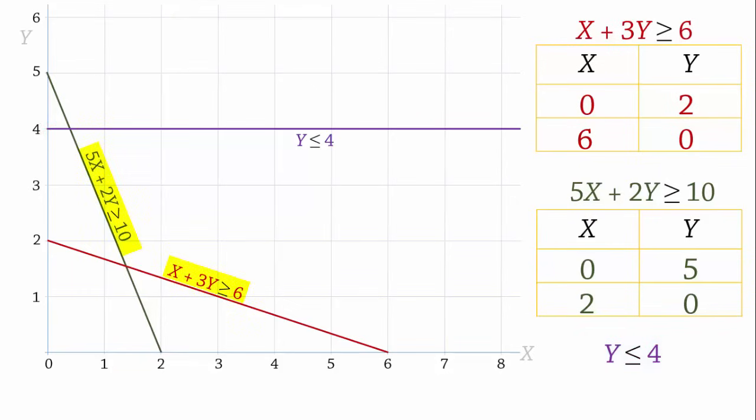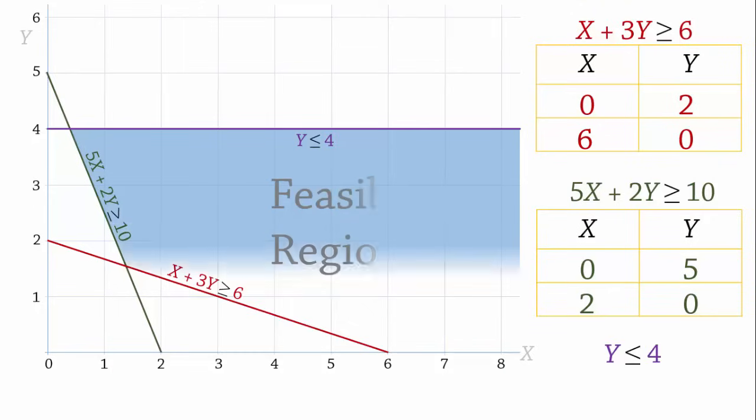Since the first two constraints are greater than constraints, they will be satisfied in the region above the lines away from the origin. And y less than or equal to 4 is satisfied below the line. The direction of the arrows shows that the region satisfying all the constraints at the same time, called the feasible region, is this area shaded in blue. The optimal solution will occur at an extreme or corner point of this feasible region. Let's label them A, B, and C for reference.